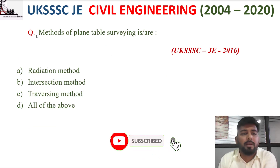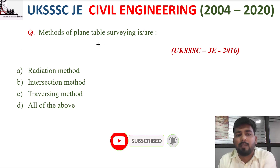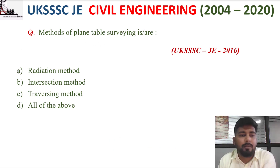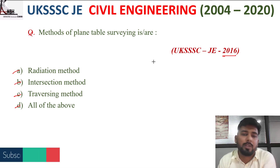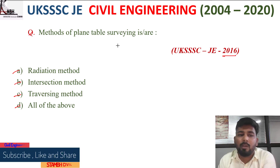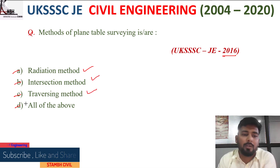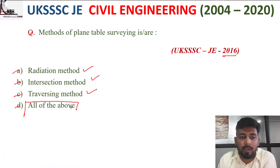Next question: the methods of plane table surveying are — option A radiation method, B intersection method, C traversing method, D all of the above. The correct option is D, all of the above.